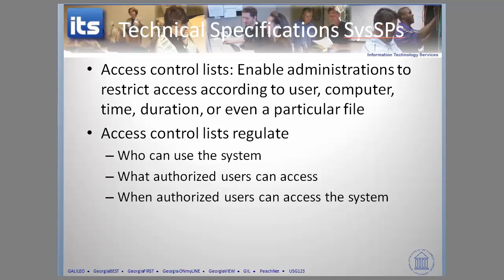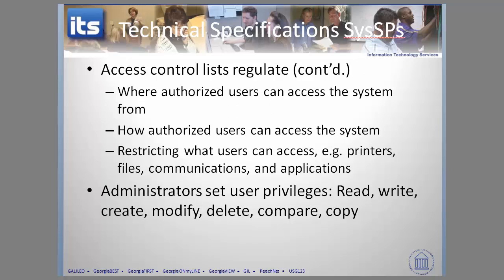Access control lists are a mechanism enabling administrators to restrict access to systems according to the user, computer, time, duration of access, or even a particular file. It's a fundamental principle associated with protecting a system — technically how you implement it. It's a very important topic within security, and you'll typically find access control lists in technical specifications or system security policies.